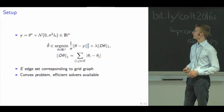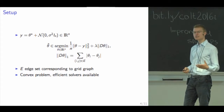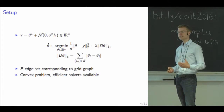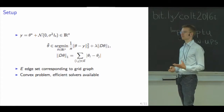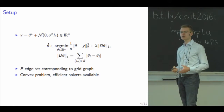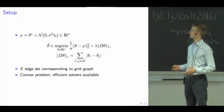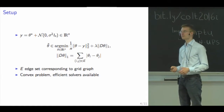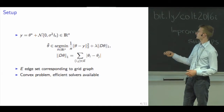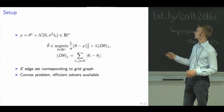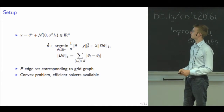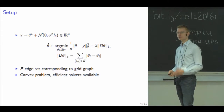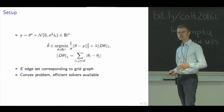We can also think about doing this for an arbitrary graph — the grid is not special in any way. We could regularize any signal having regularity along a graph given by an edge set E. Here D is the matrix giving us the corresponding pixel differences, and it's a convex problem so we have efficient solvers.